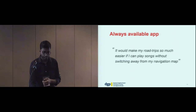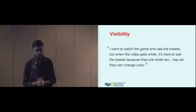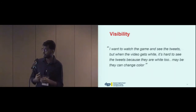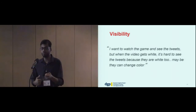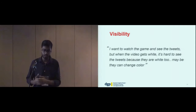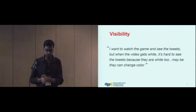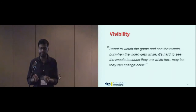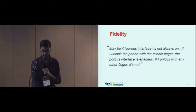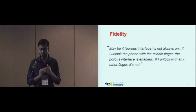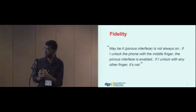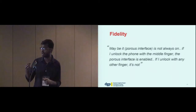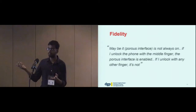Participants commented on visibility — for example, 'I want to watch the game and see the tweets, but when the video gets white, it's hard to see the tweets because they are white too.' There are app pairings where this will work really well and others where it might not, and in the paper we qualify what will work. Participants also discussed fidelity and suggested different modes of operation, such as: 'Maybe porous interface is not always on — if I unlock the phone with the middle finger, the porous interface is enabled; if I unlock it with any other finger, it's not.' That's actually a very good suggestion.